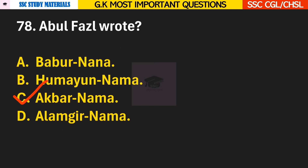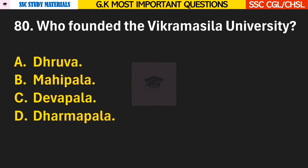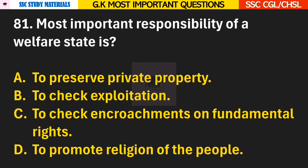Question 79: Which of the following was not known during the Rig Vedic period? Answer B — iron was not known to the people. Question 80: Who founded the Vikramashila University? Answer D — Dharmapala founded the university. Question 81: Most important responsibility of a welfare state is? Answer B — To check exploitation.